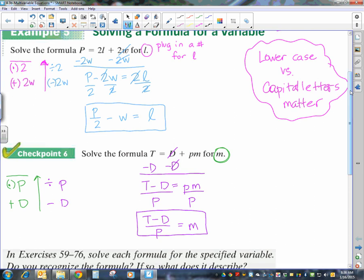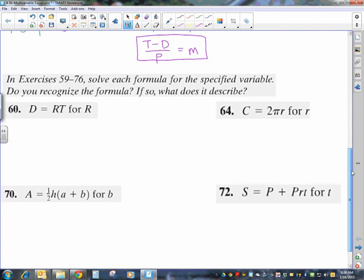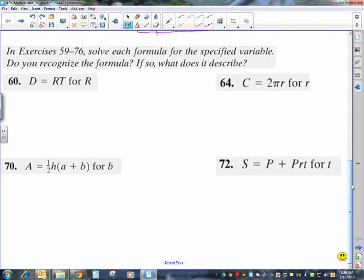Alright, so I picked some even problems out of your homework assignment. And I'm going to work through these problems. So I have D equals RT, and I'm trying to solve for R. So, if I plug my number in, all I would do would be to multiply that by T. So, to go backwards, then I'm going to divide by T because that's the only operation. So, I divide both sides by T.